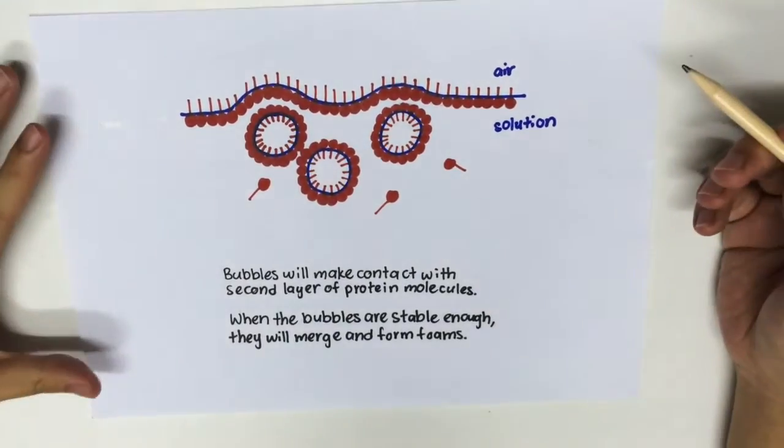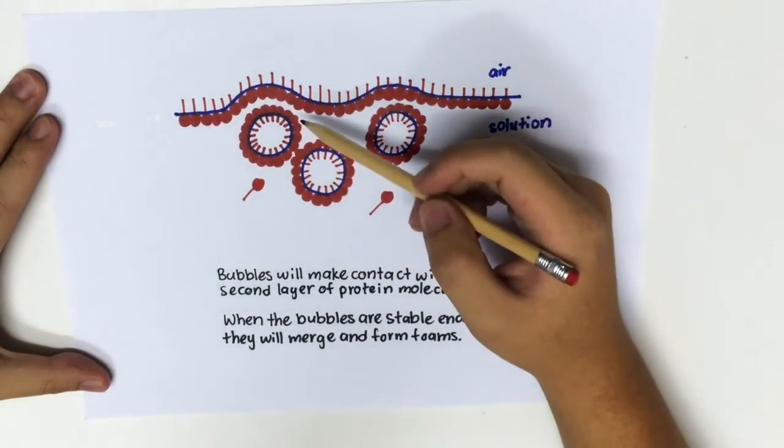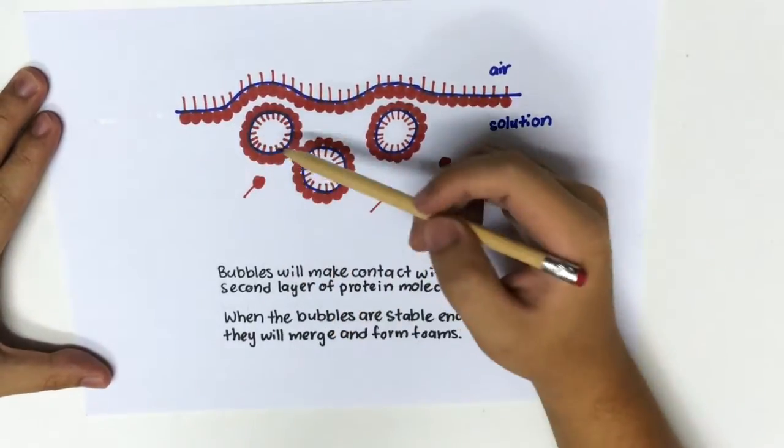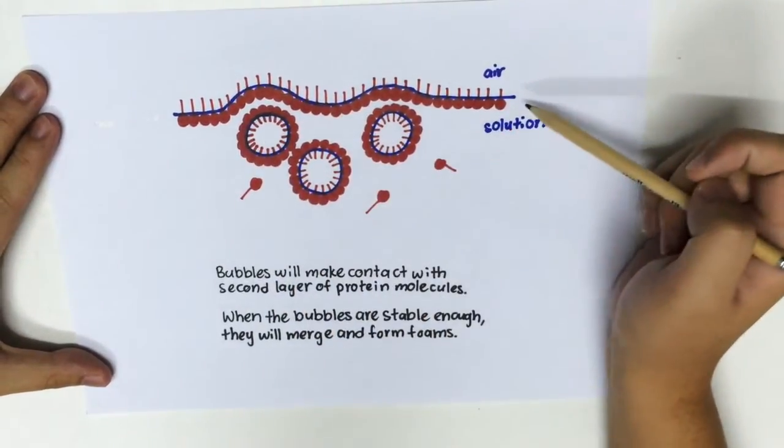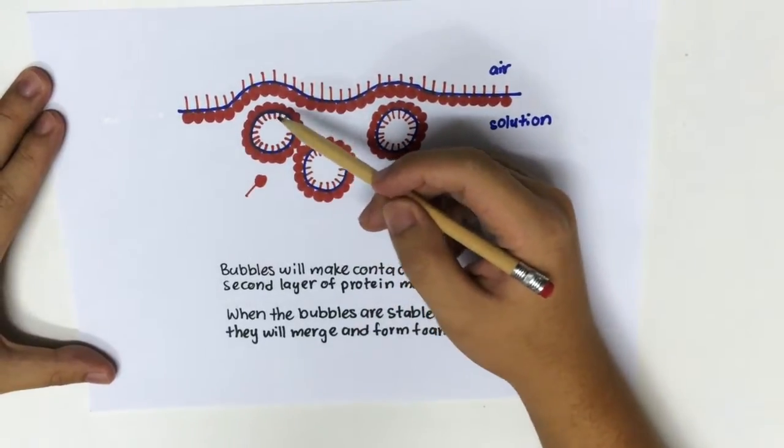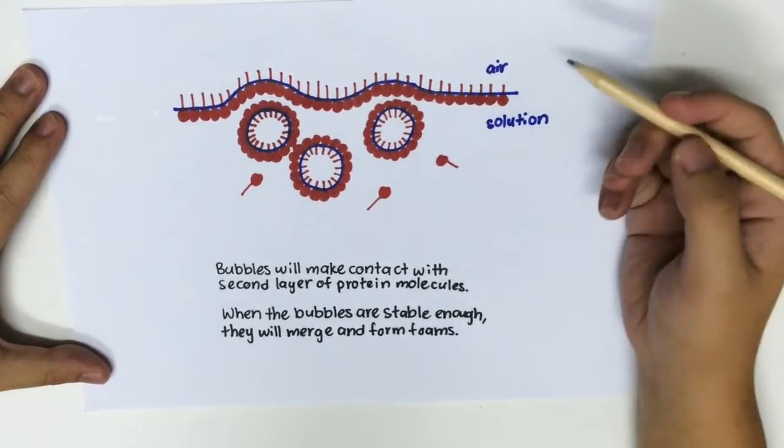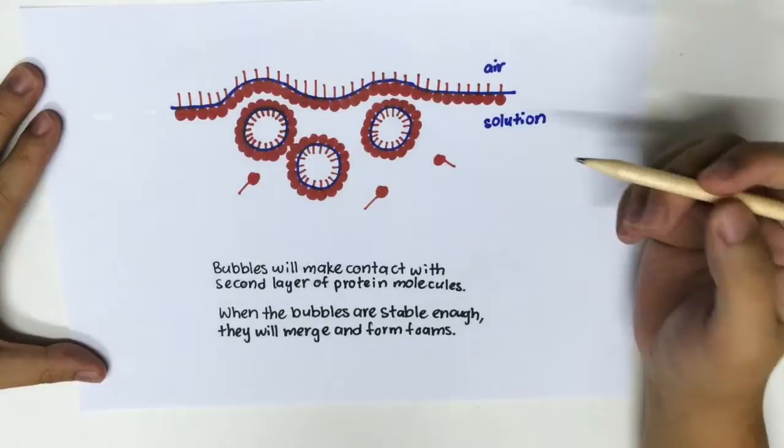As the bubbles are continuously formed, they make contact with another monolayer of protein molecules either on the air solution interface or the previously formed bubble. When the bubbles are stable enough, they merge and form foam on the surface of the solution.